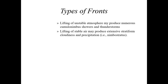If we have lifting of that warm air in a more stable air mass, that's going to produce more layer-like stratus clouds and more continuous precipitation from nimbostratus clouds. The stability of the atmosphere ahead of cold fronts is very critical to what type of weather we see at the Earth's surface. An unstable atmosphere will result in cumulonimbus clouds, showers and thunderstorms, while a more stable air mass will produce layer-like stratiform clouds and more continuous precipitation.